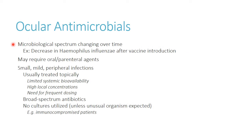Looking at ocular antimicrobials, the spectrum changes over time — for instance, H. flu goes down as vaccinations become more prevalent. For mild peripheral infections, you can usually get away with topical therapy. The benefits include limiting systemic bioavailability — you don't see high systemic levels. You're also going to have high local concentrations, which in many cases can overcome bacterial resistance. We won't see a ton of resistance develop to these ocular medications, mainly because they achieve such high concentrations.